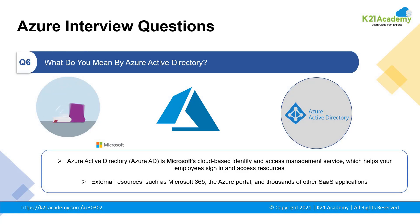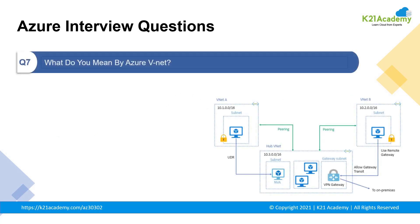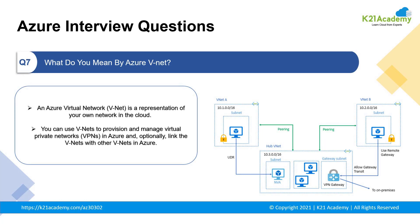Our seventh question is: what is Azure VNet? This is a surprise question as it was asked by Microsoft in its off-campus drive. Azure Virtual Network is a fundamental building block of your own private network in Azure. The VNet enables many types of Azure resources, such as Azure Virtual Machines, to securely communicate with each other. An Azure Virtual Network is also a representation of your own network in the cloud.